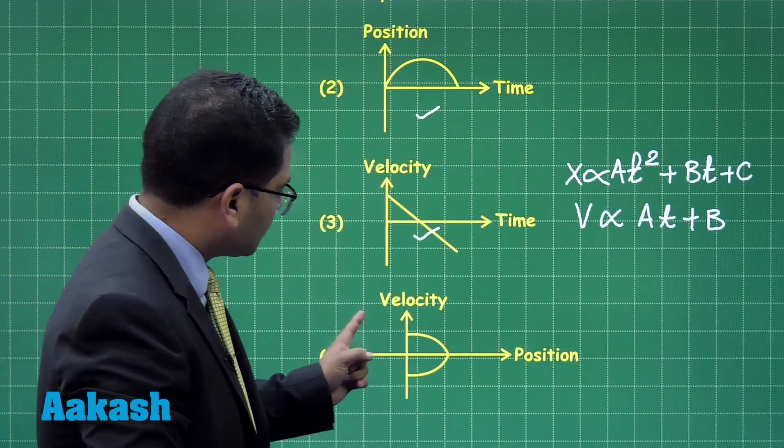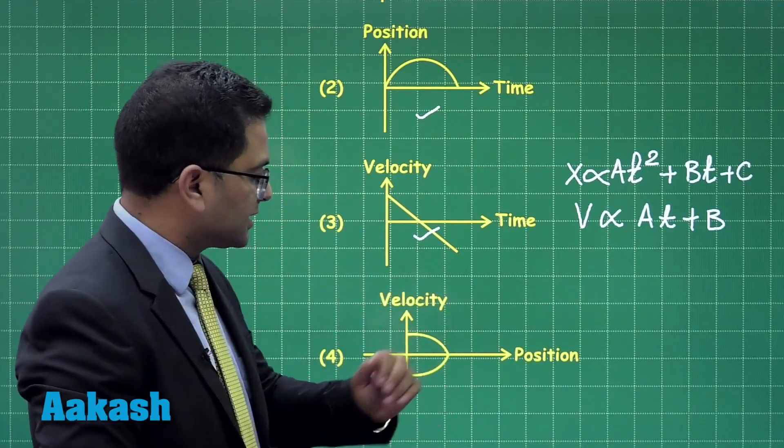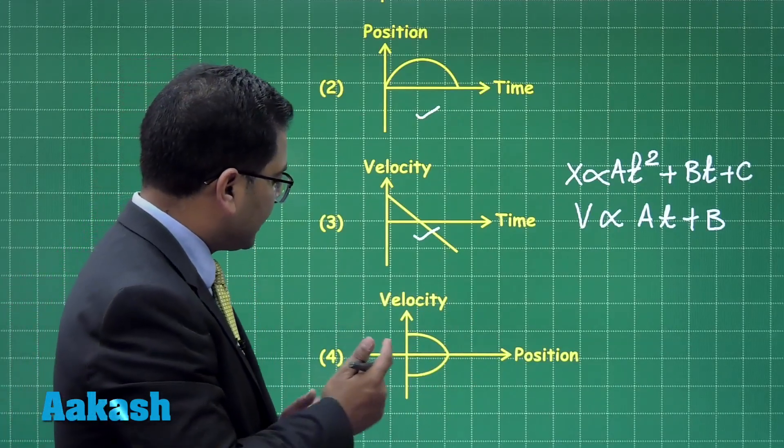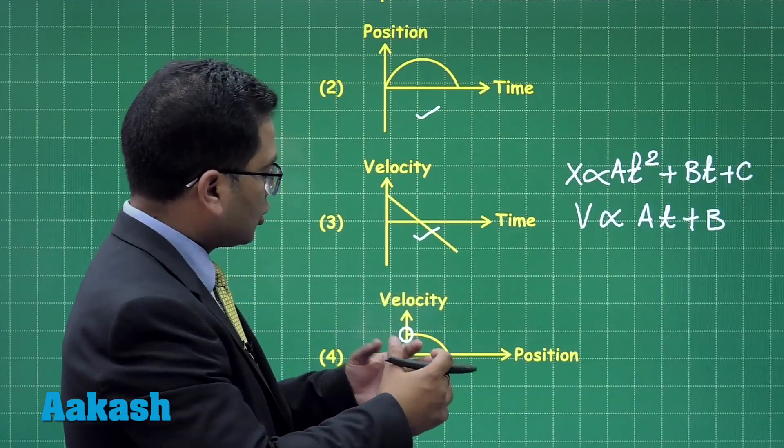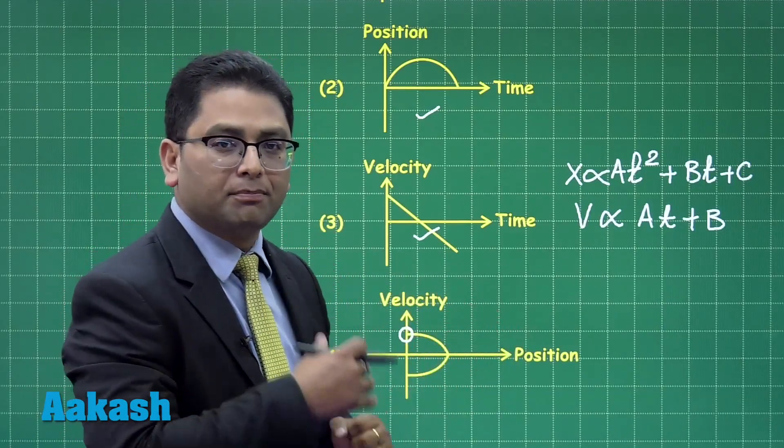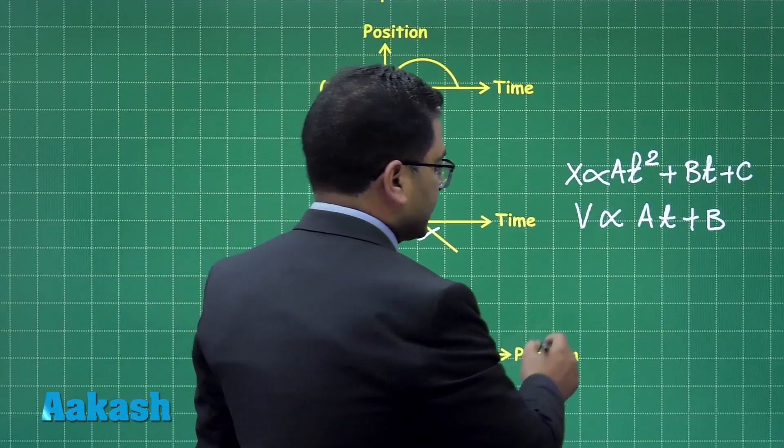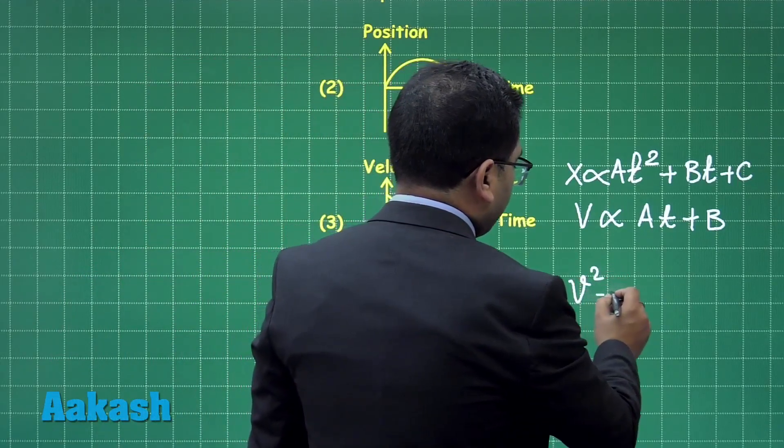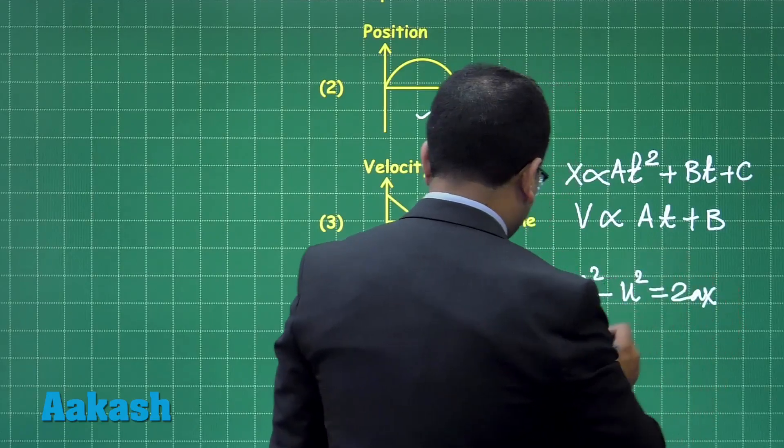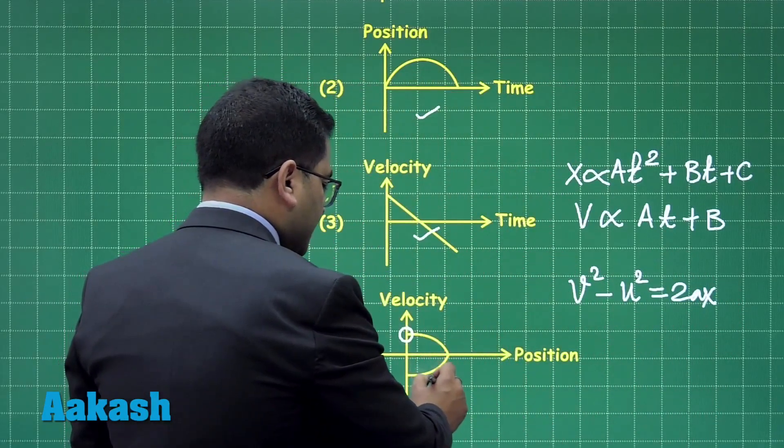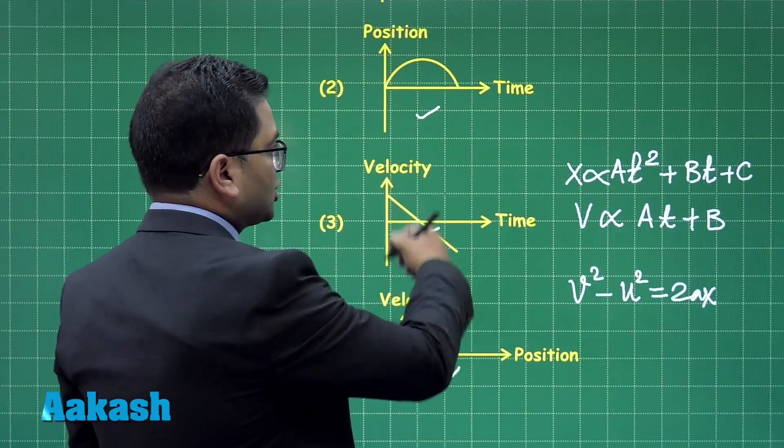Then even if you see here, velocity versus position, this is clearly indicating it starts with a certain velocity and the variation goes v under root of 2ax plus an additional value which has been brought from v squared minus u squared equals to 2ax.